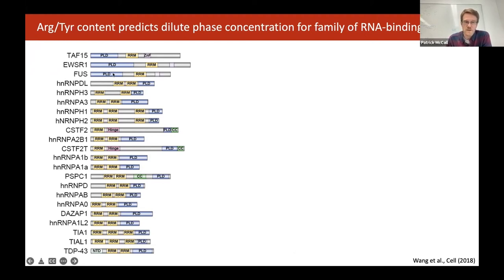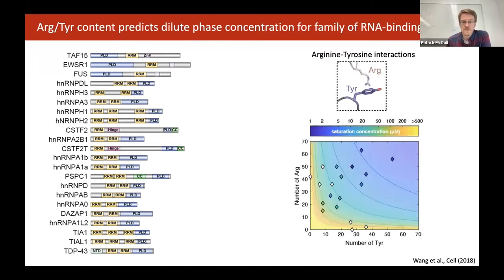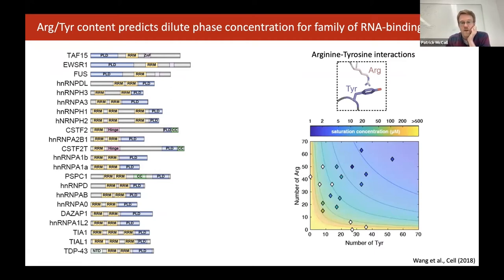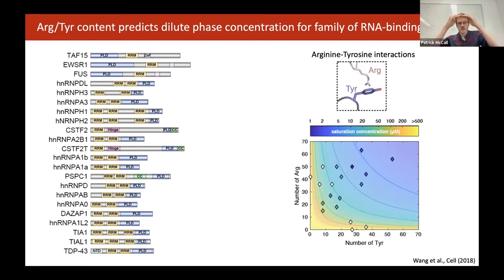These proteins share a similar domain structure — prion-like low complexity sequences and also folded RNA binding domains. All members of this family readily phase-separate into droplets. What Jia did was correlate the concentration at which they phase separate — their saturation concentration, the left-hand branch of the phase diagram — with their sequence composition, particularly looking at the number of tyrosine residues and the number of arginine residues. He found a very strong correlation: the more of each of these residues, the lower the protein concentration at which you start to demix.